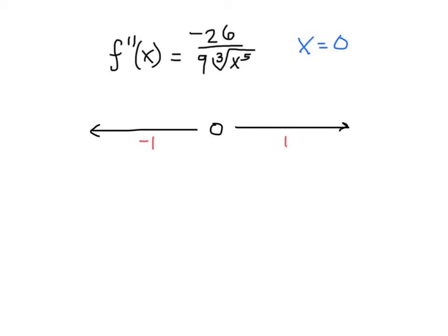So let's start with the negative side. We'll plug in negative one. When you plug in negative one to this crazy function, you basically get negative 26 divided by negative nine. The cube root of negative one to the fifth is negative one. And so we get negative 26 over negative nine, which is a positive value.